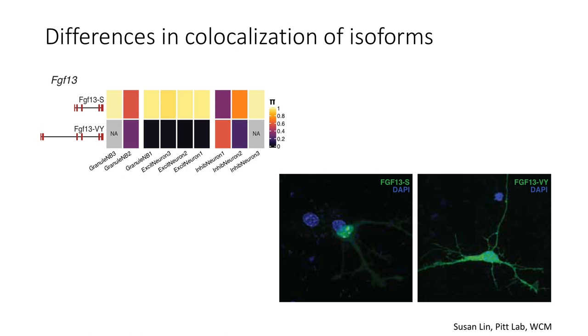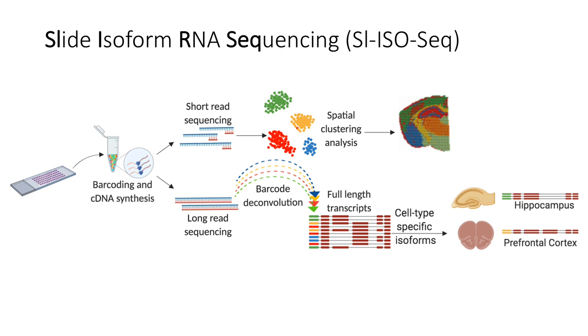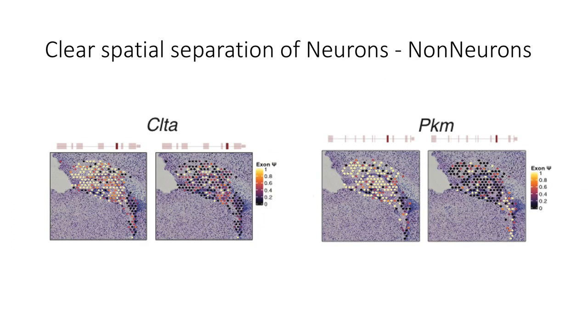We validated our results even further by doing slide isoform sequencing, which is the same instead of using homogenized tissue we use tissue mounted on a slide, and then instead of having cell type specific isoforms we have region specific isoforms here, and we see a clear spatial separation of neurons versus non-neurons.